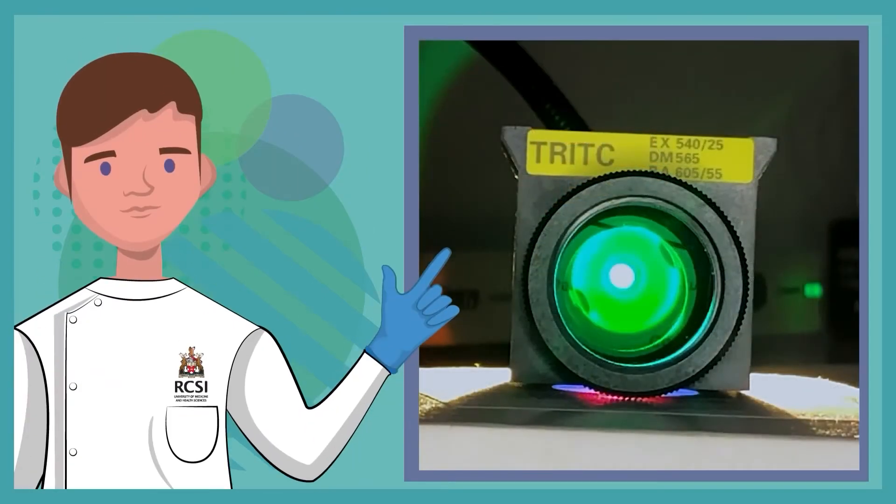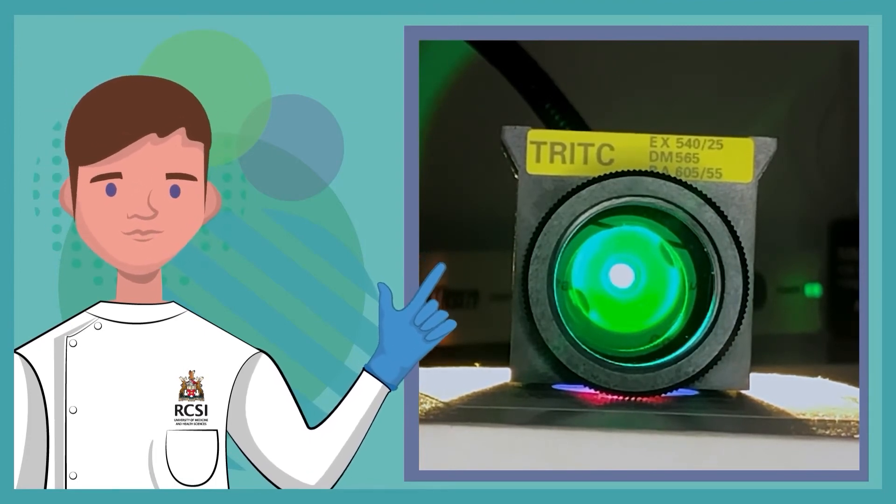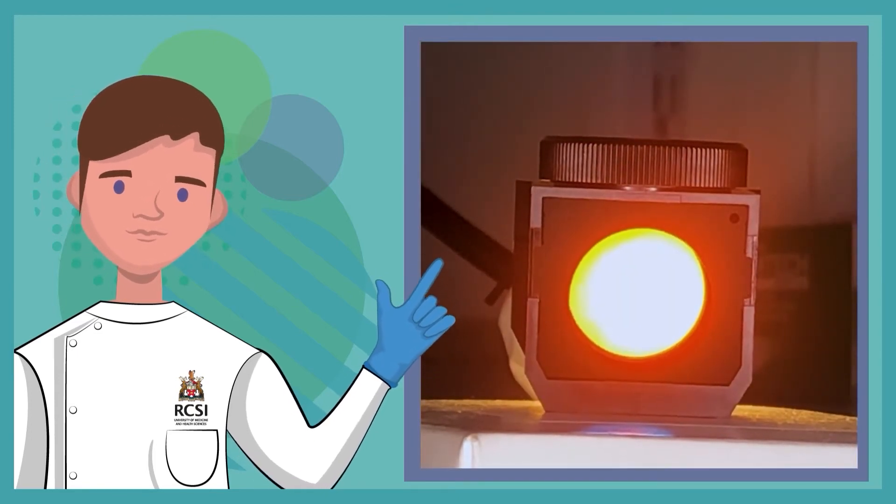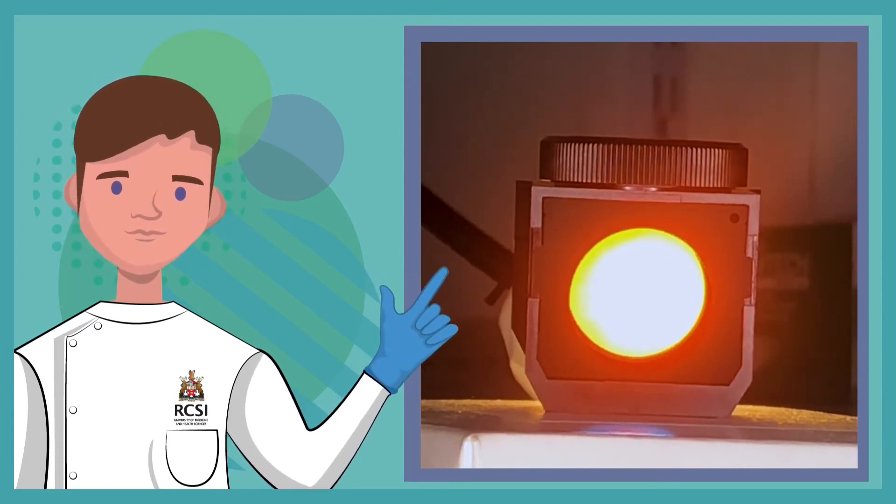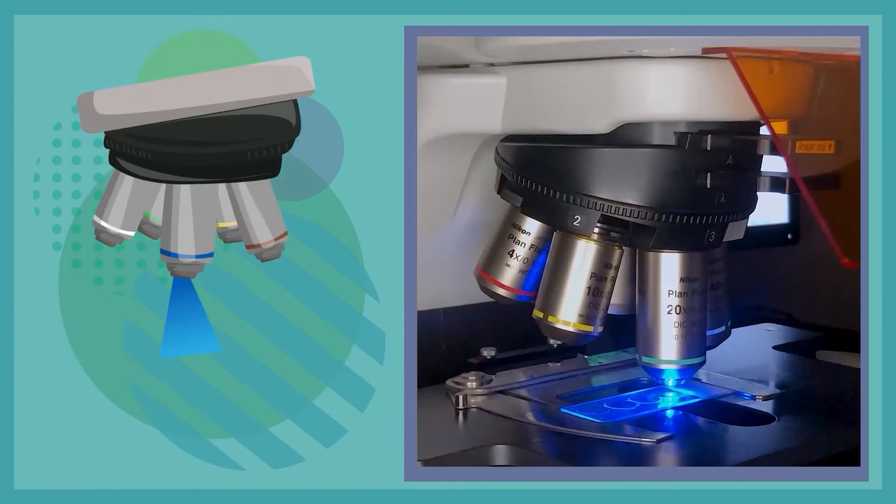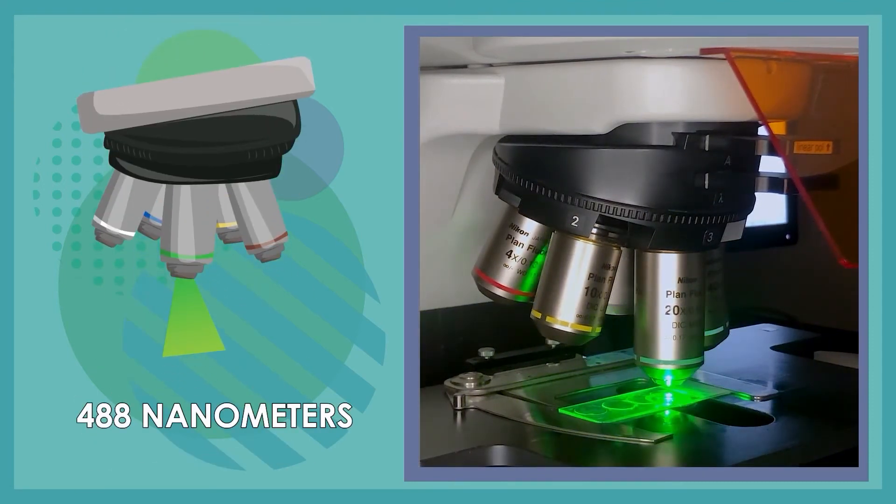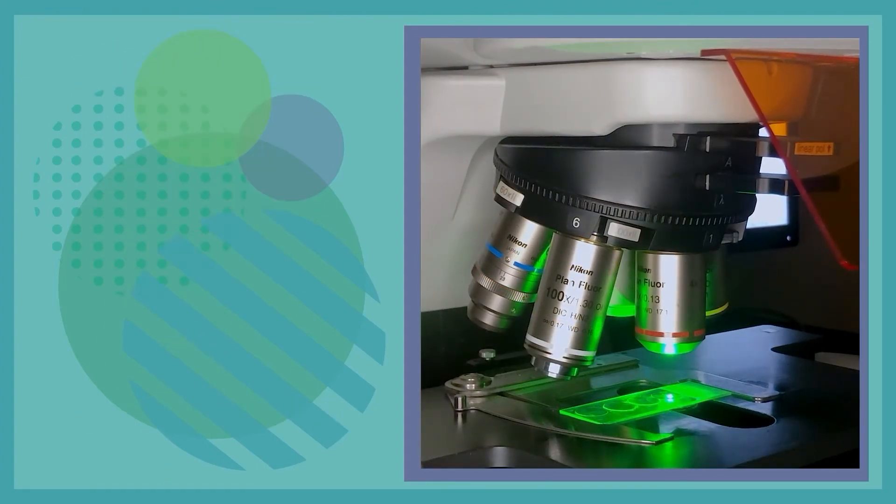Depending on the fluorescent tags used on your samples, you'll need to use different filter blocks to excite different wavelengths. These filter blocks can visualize different fluorescent tags on your samples by exciting the fluorophore or the fluorescent tag at different excitation wavelengths. For blue we commonly see laser lines used around 359 nanometers. For green we see 488 nanometers, and for red we commonly see 555 nanometers for an excitation wavelength.